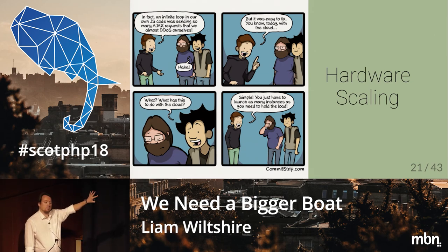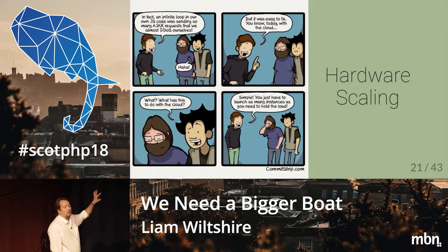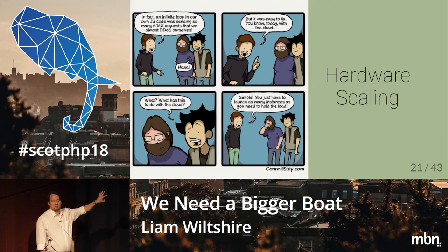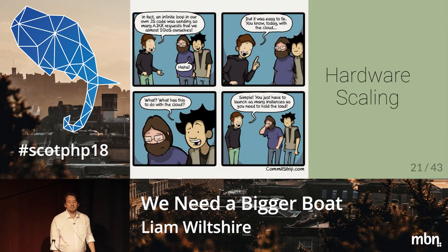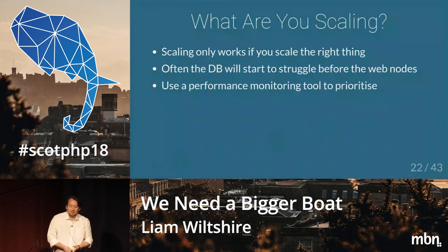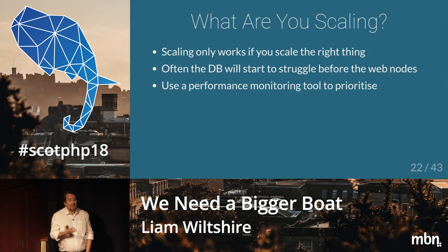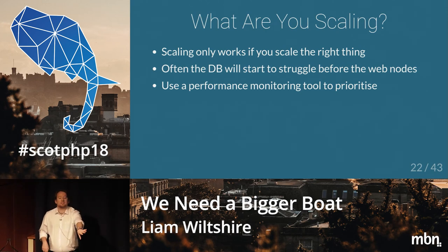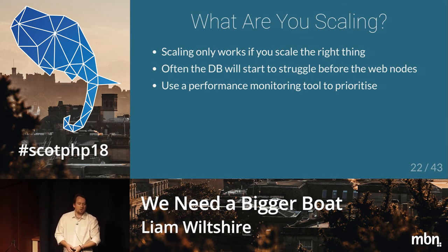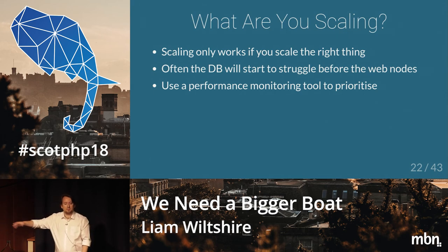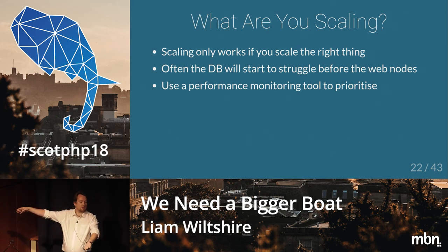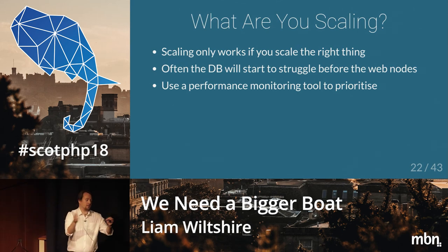Incidentally, if you don't know Commit Strip, it's a brilliant comic about the life of a digital agency — do check them out. The first thing to ask yourself is: what are you scaling? Scaling only works if you scale the right thing, and it can be misleading. You fire up New Relic and it tells you a web transaction took four seconds, and you immediately think the web node must be struggling. Actually it's not — it's the DB. Because you've got a blocking request on the DB, the PHP thread is waiting for the DB to come back, so it looks like it's the web node that's the problem.